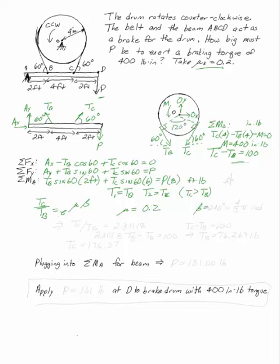So setting mu equal to 0.2 and beta is, this is 120 degrees by geometry. So beta is 240 degrees, which is 4 thirds pi radians. That gives me TC over TB is 2.3118. I can plug that into my equation for equilibrium for the wheel to get TC 2.3118 TB minus TB is 100. So TB is 76.267 pounds.